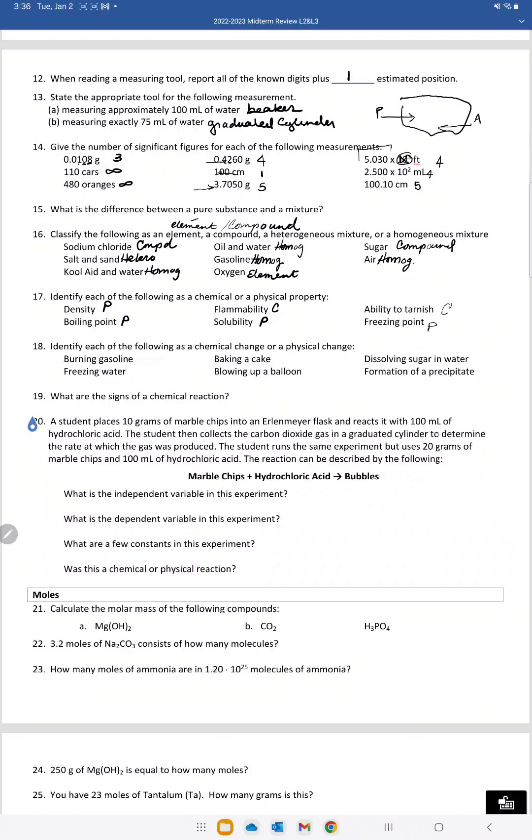Chemical change or physical change. Burning gasoline, that's chemical. Freezing, all changes of state are physical. Baking a cake is chemical. Blowing up a balloon is physical. Dissolving is always physical. And formation of a precipitate - you're mixing two solutions together that are clear and you get something that's cloudy or a solid is formed. So that is chemical.